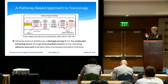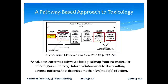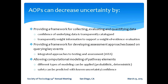So what is a pathway-based approach? An adverse outcome pathway, as it's come to be known in the toxicological field, is a biological map from the molecular initiating event — whether that's a chemical binding a receptor or covalently interacting with DNA or a protein — through the intermediate events at the cellular, tissue, organ, and organismal levels, all the way to the resulting adverse outcome. It includes a description of the mechanism or mode of action. AOPs can decrease uncertainty by providing a framework for collecting, organizing, evaluating, and quantifying all of the information that goes into the decision process.